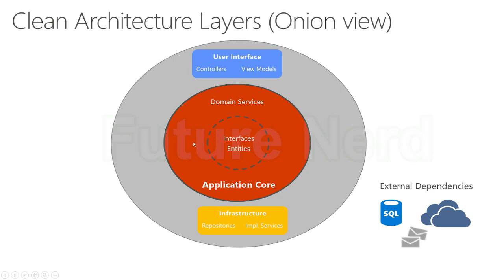In this diagram you can see that we have an application core, user interface, and infrastructure. The application core has domain services, interfaces, and entities. Everything that is most important and business-domain related would be in the application core. The application core is a combination of the domain layer (or core layer) and the application layer.